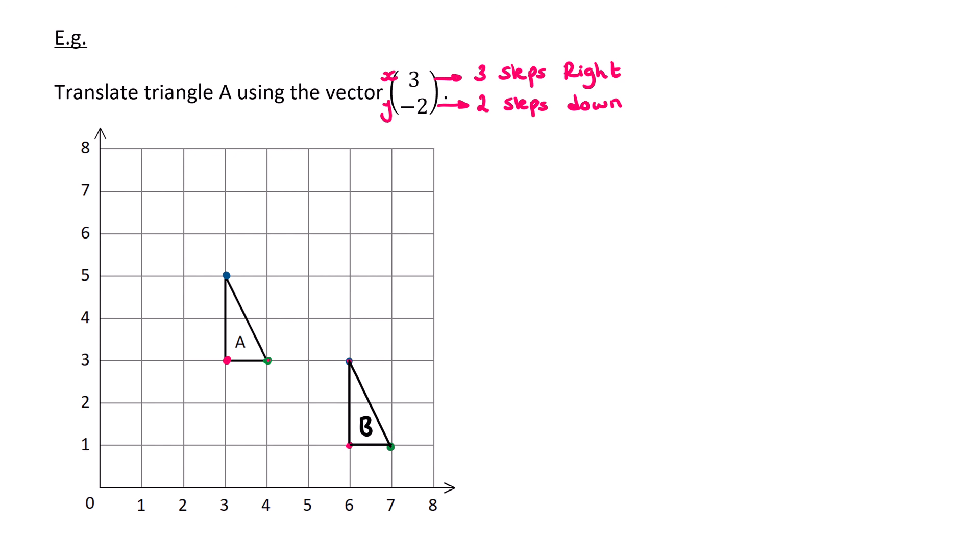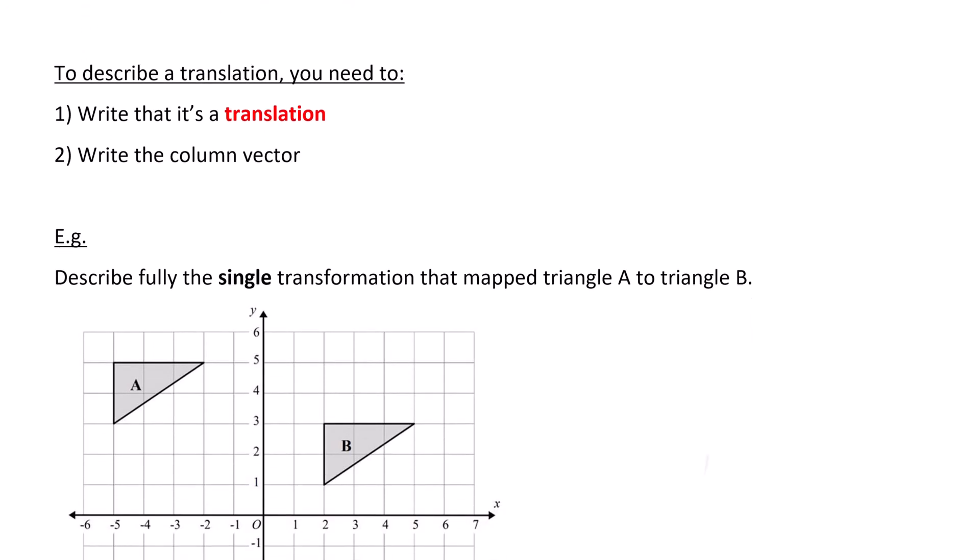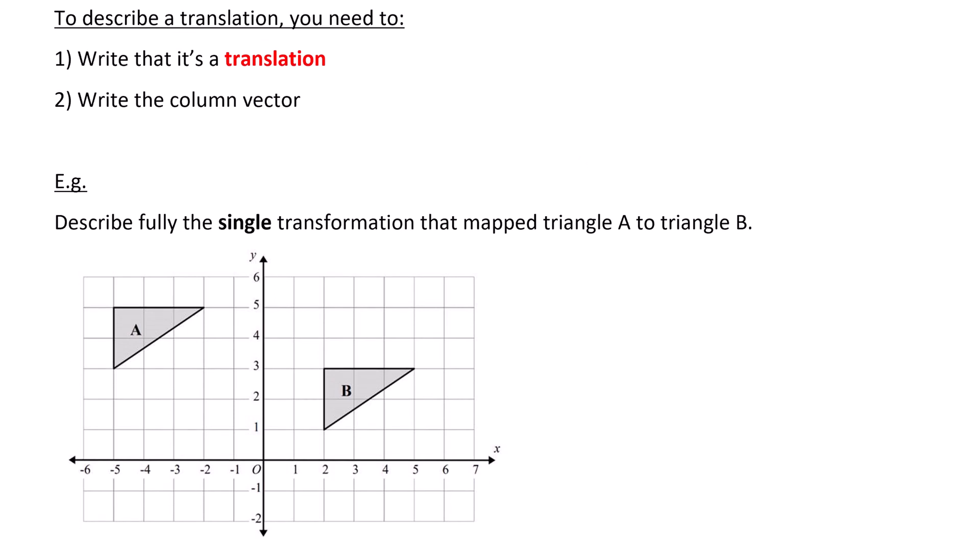The other type of questions that they could ask is for you to describe a transformation. So they will not tell you that it's a translation or a reflection or an enlargement or a rotation. They will word it like this example. They will say, describe fully the single transformation.